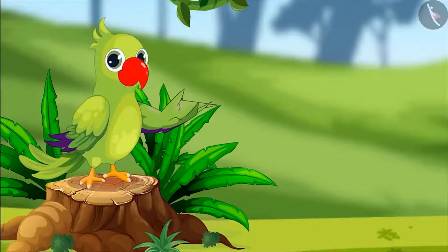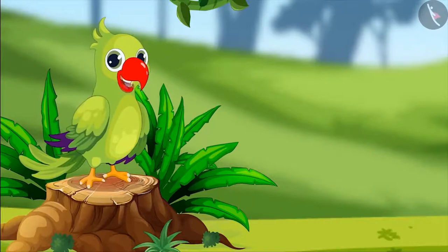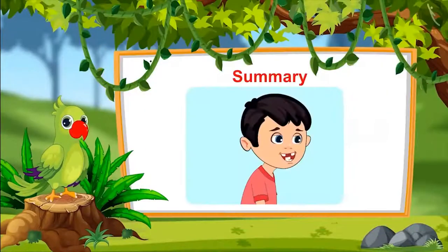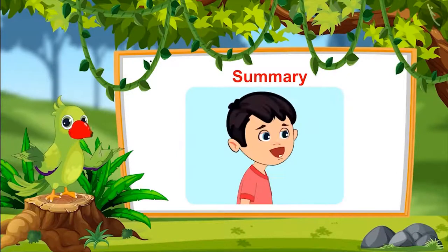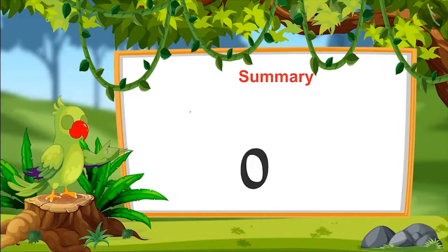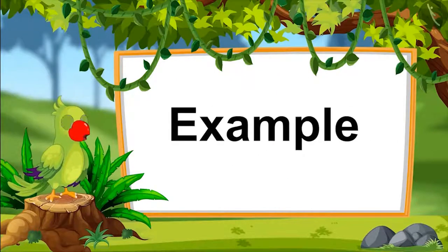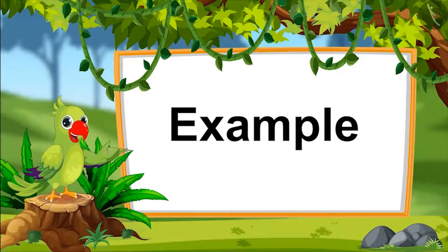So friends, did you enjoy learning about zero? That was all for today. Let us revise what all we have learned today. When we reduce things till we do not have a single thing left, then we say we are left with zero things. In the next video, we will look at some more examples to understand zero better. Till then, goodbye friends!